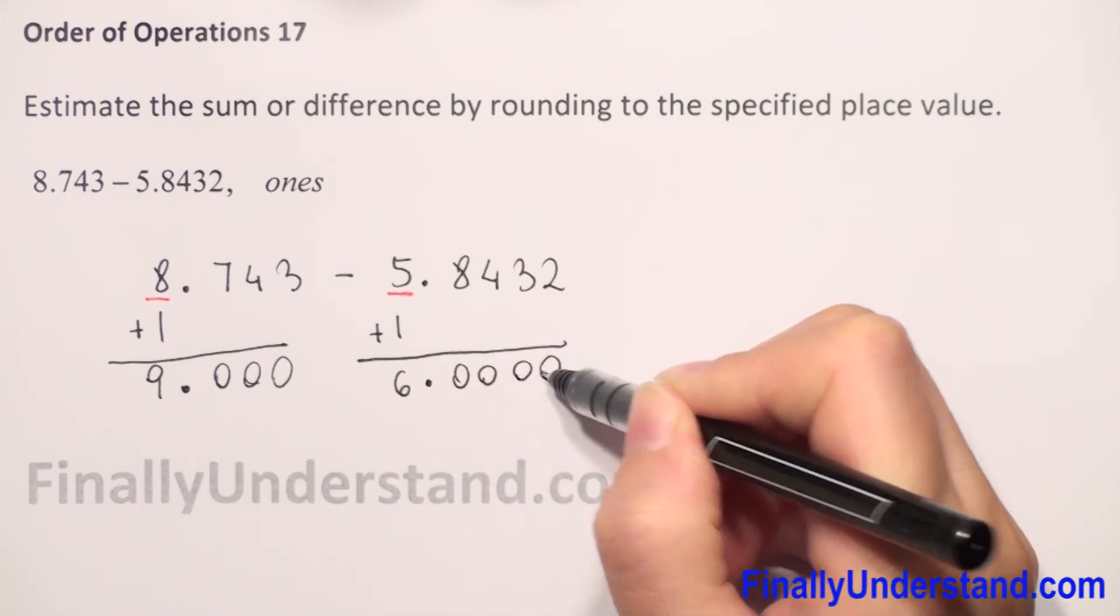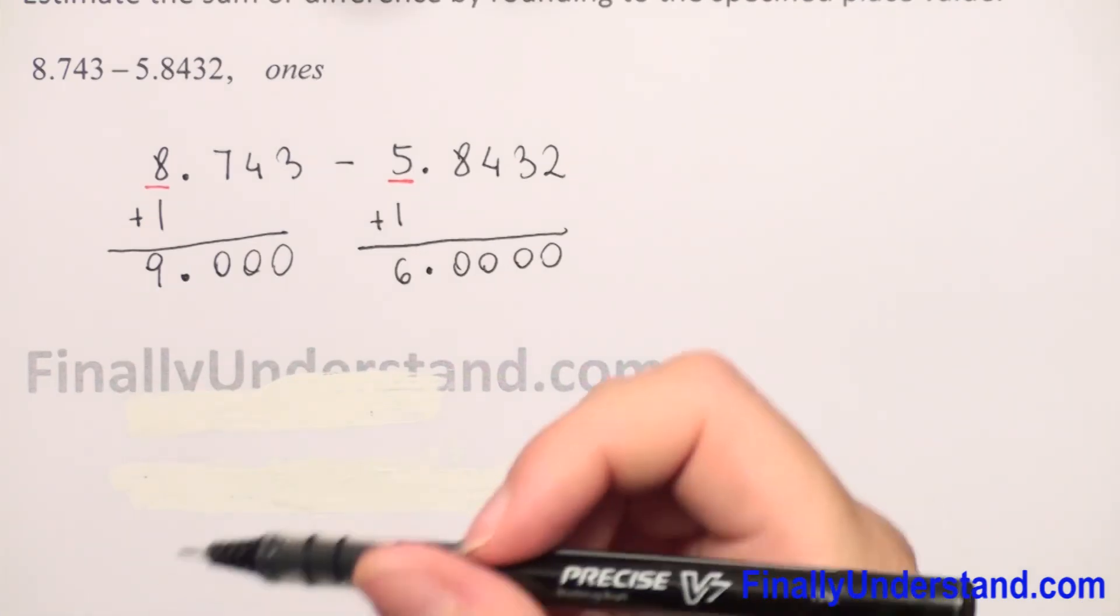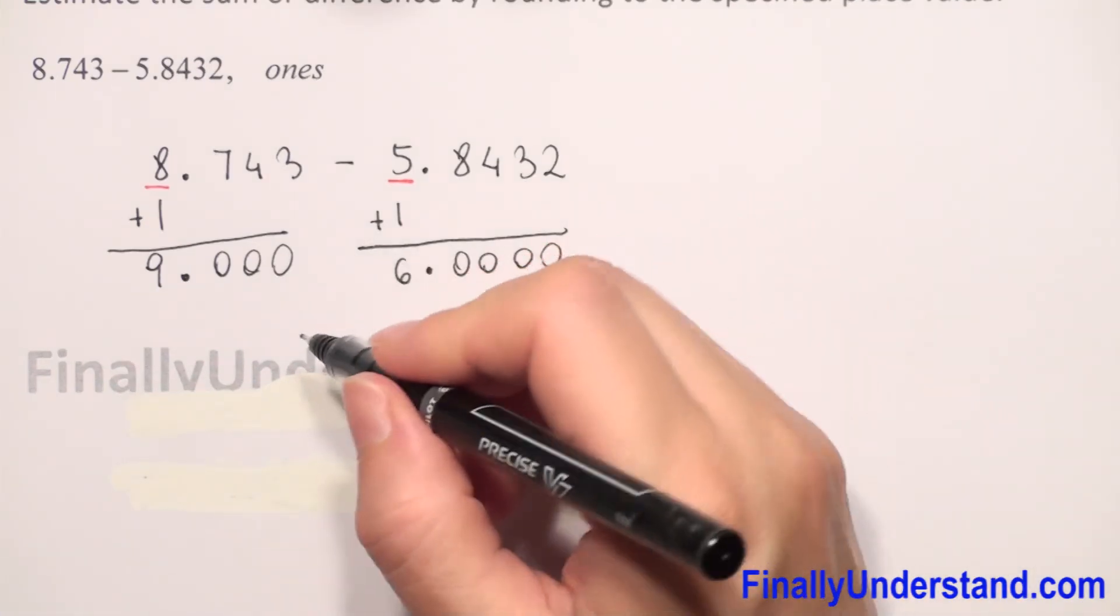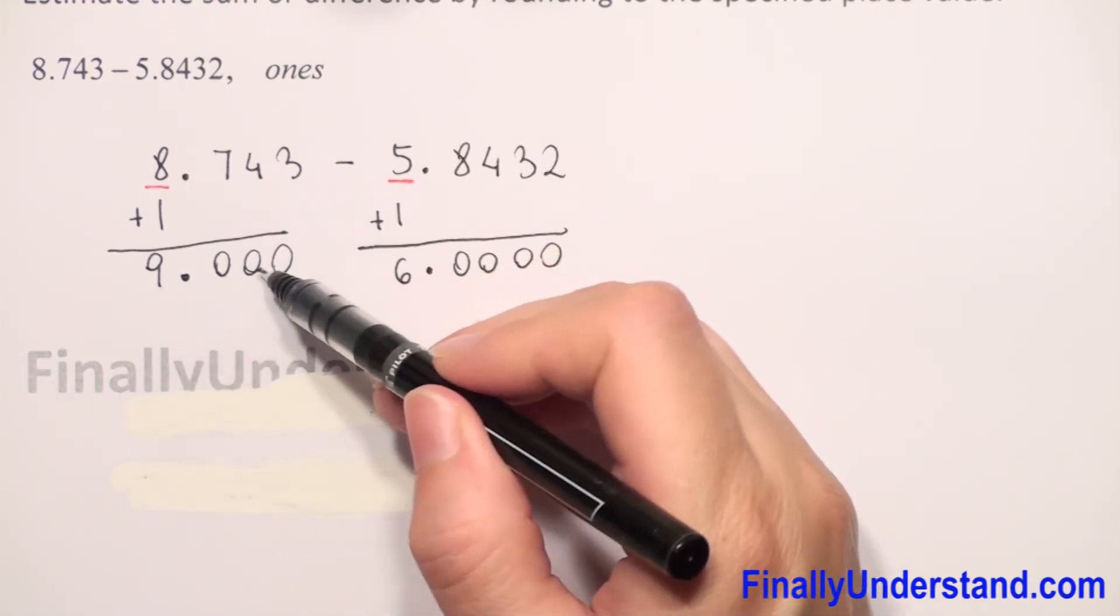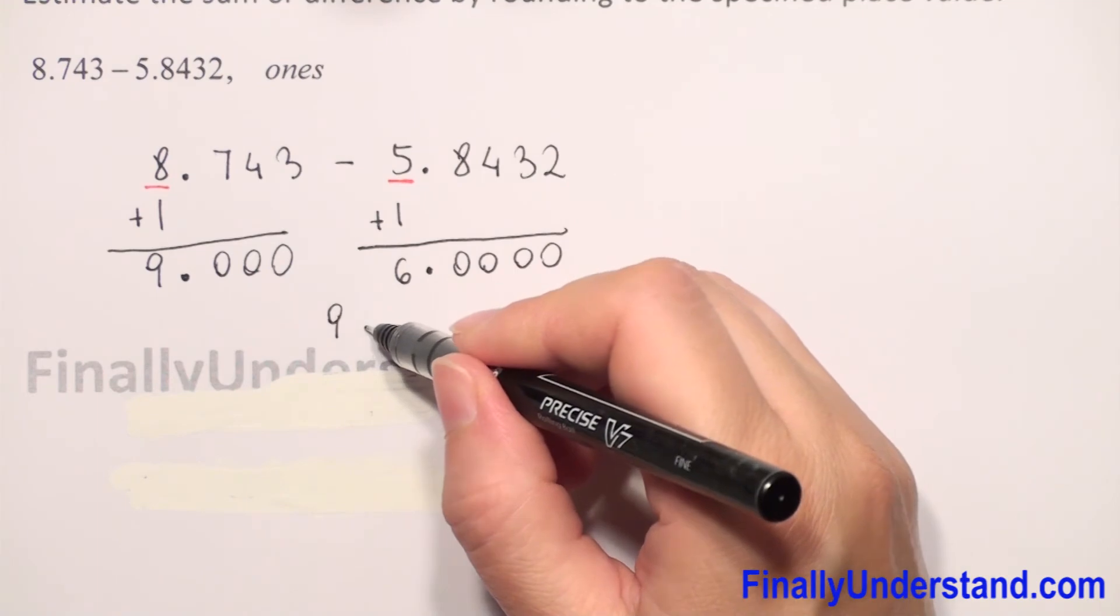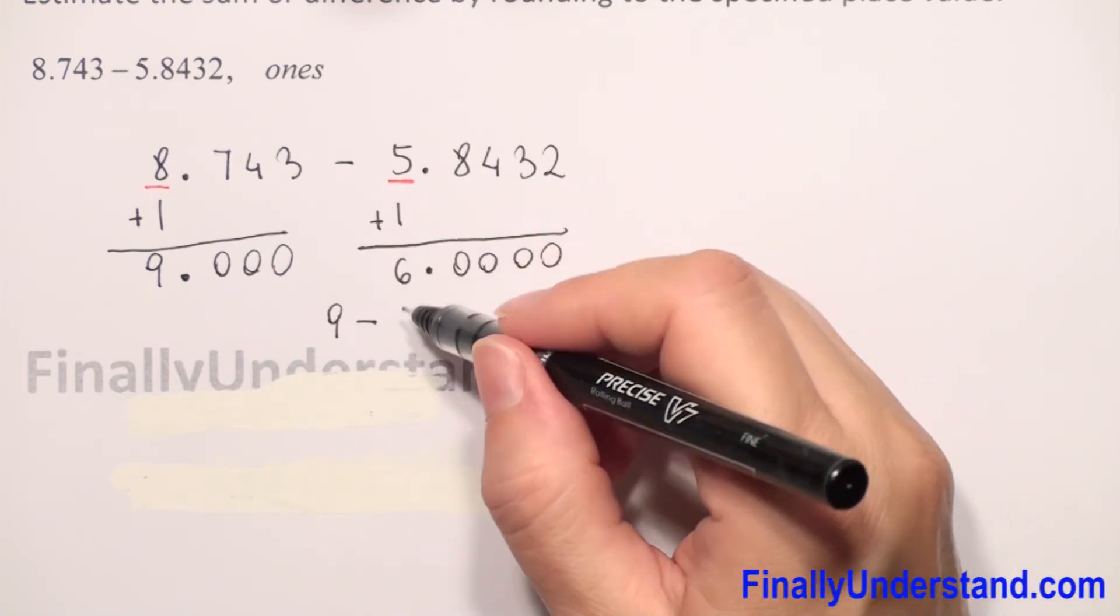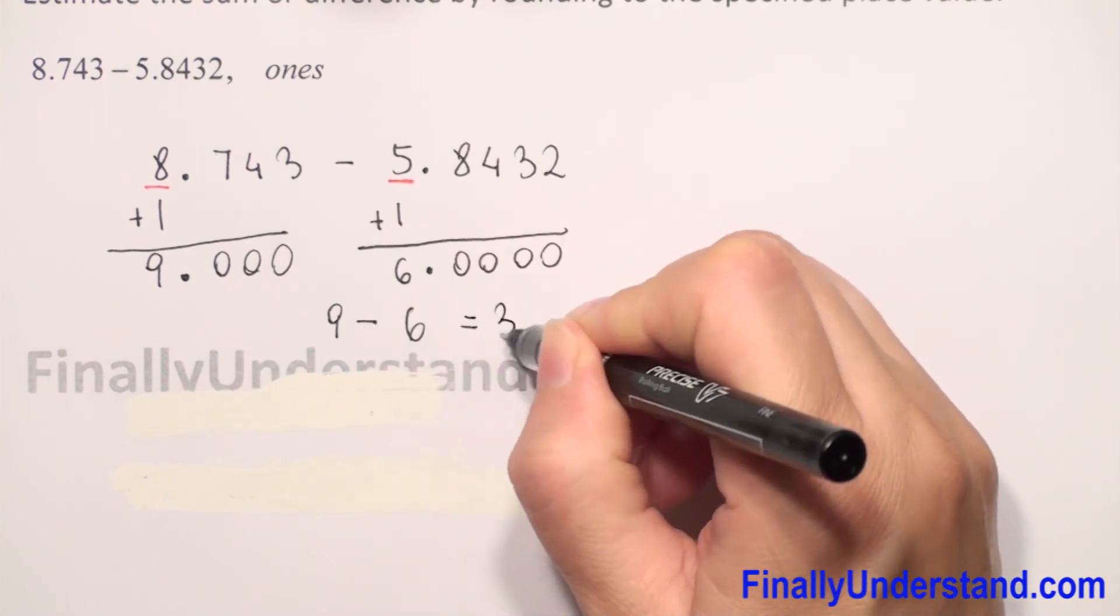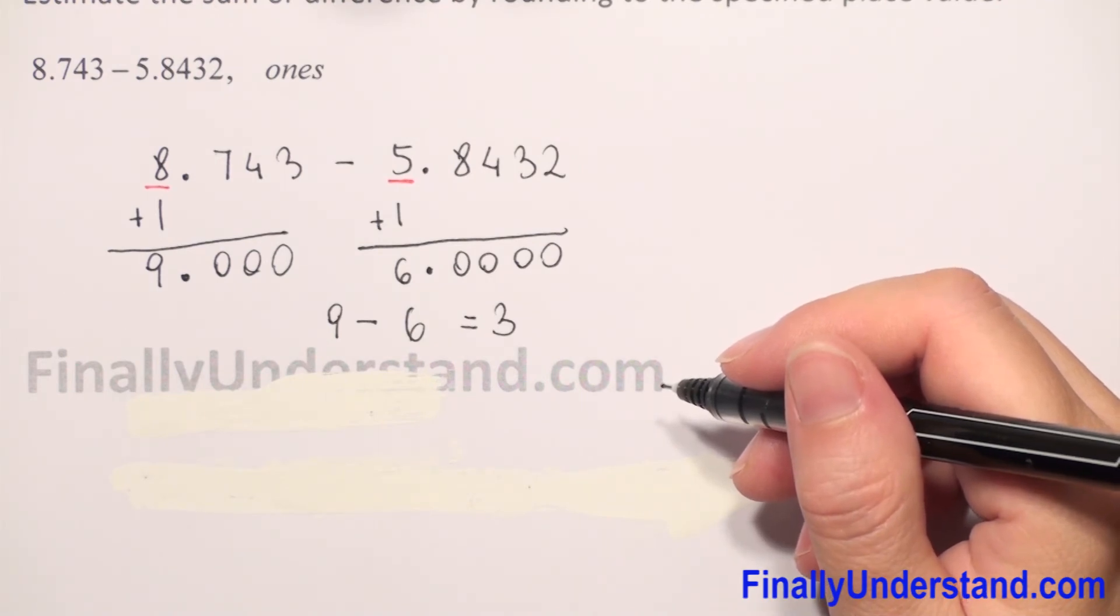Next, we find the difference. We have 9.000, which is 9, minus 6.000, which is 6. 9 minus 6 equals 3. So we estimated the difference between these two numbers.